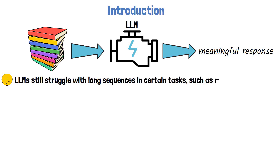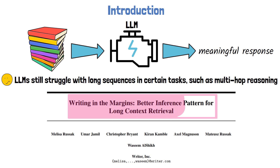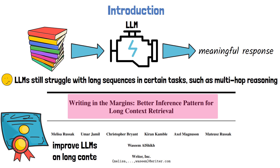One such challenge is multi-hop reasoning, which requires the model to connect disparate pieces of information that may be far apart in the text. In this video, we explain a new research paper titled 'Writing in the Margins: Better Inference Pattern for Long Context Retrieval.' This paper introduces a novel method designed to significantly enhance the performance of large language models on long sequences across various tasks, and they achieve that without a need for any fine-tuning.